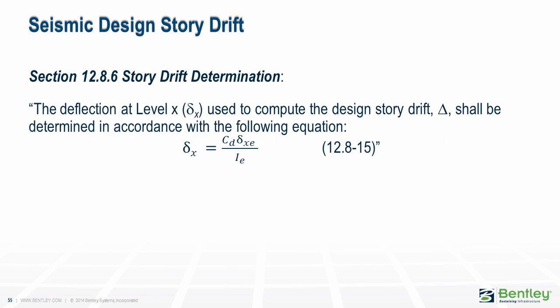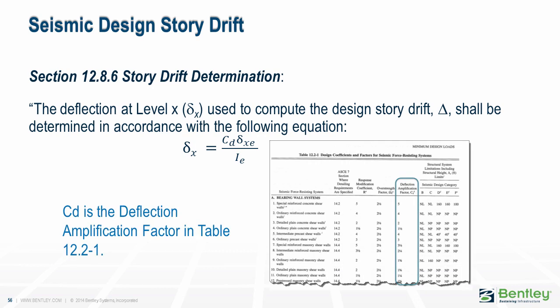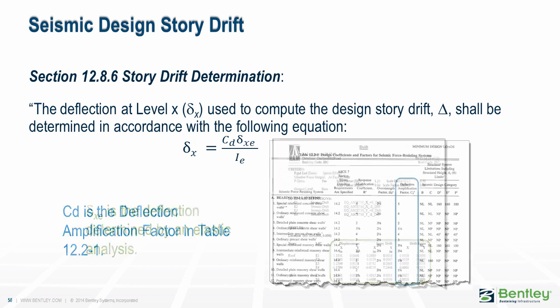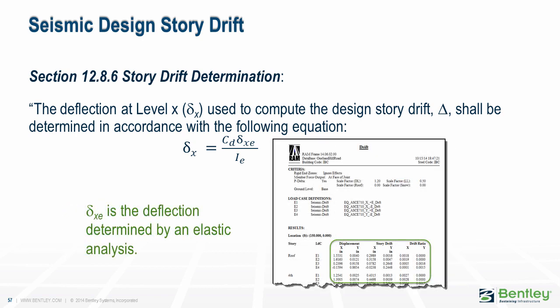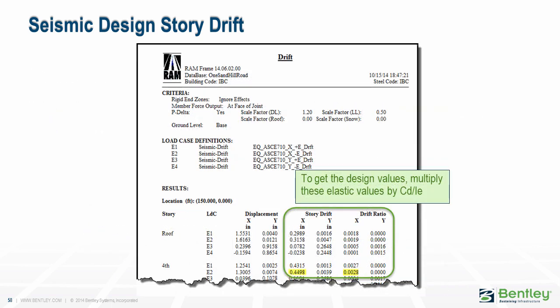Let us now turn to a discussion of the design story drifts. Section 12.8.6 defines the design story drift as shown. C sub D is the deflection amplification factor given in Table 12.2-1, dependent upon the type of force-resisting system. For a special reinforced concrete shear wall system, the value of C sub D is 5; for steel special moment frames, it is 5.5. Delta sub XE is the elastic deflection — the values listed in the reports we have been looking at are the elastic values. To get the amplified values of drift, multiply the listed values by C sub D over I sub E.